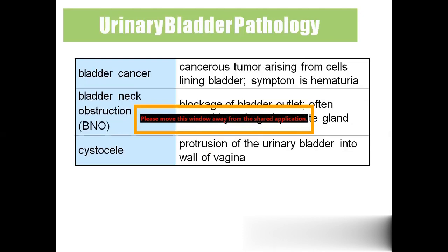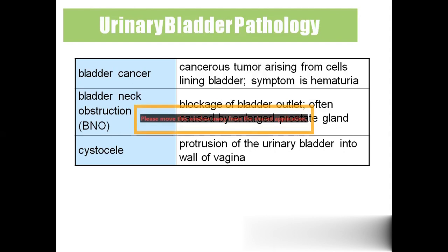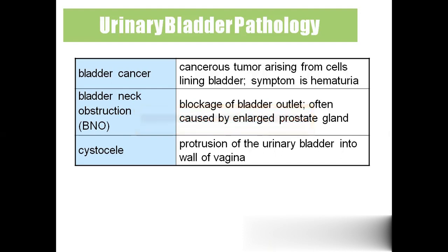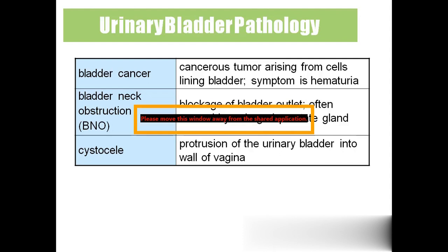Urinary bladder pathology: Bladder cancer is a cancerous tumor arising in the bladder; the symptom is hematuria — blood in the urine ('hema' means blood, 'uria' means urine). Bladder neck obstruction: in the male urinary system, the prostate gland sits below the bladder; enlargement of the prostate obstructs the bladder neck, like pressing on the mouth of a balloon so the air cannot escape.